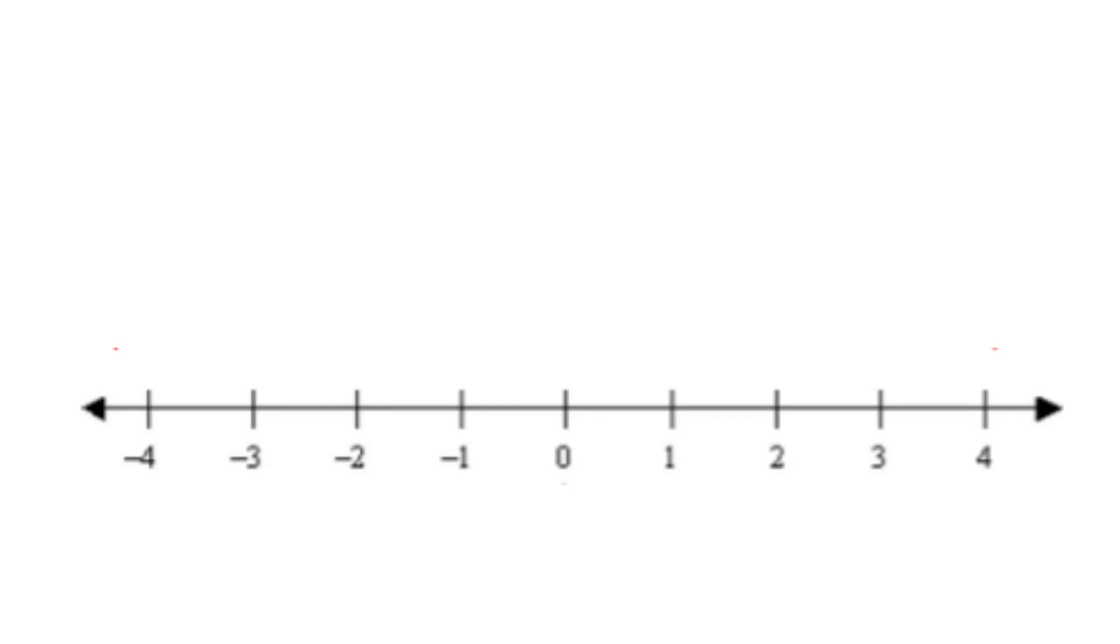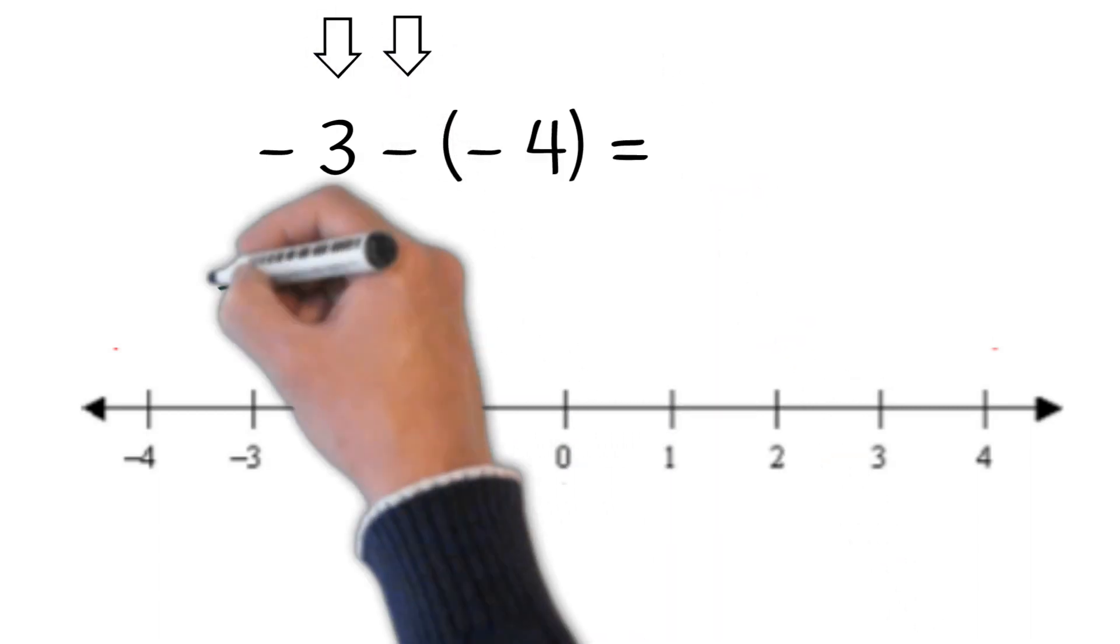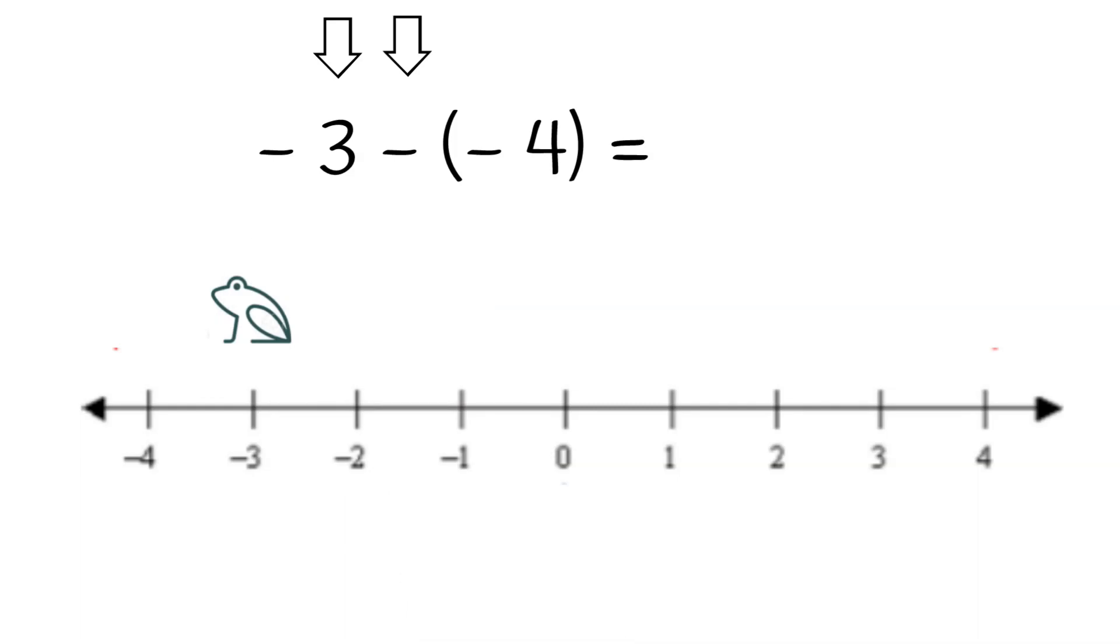Let's try another one. What about negative 3 minus negative 4? Our first number is negative 3, so that's where we start. Our operation is a minus, so he will look left towards the negative end.